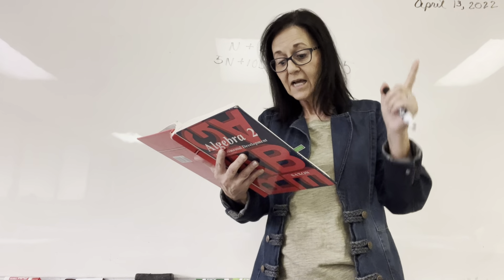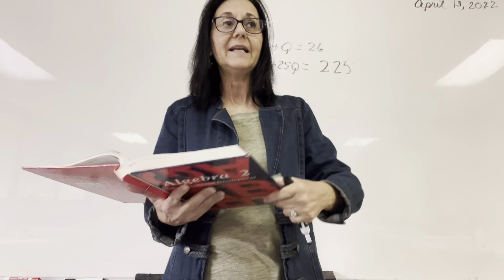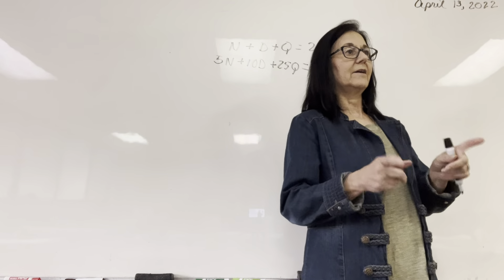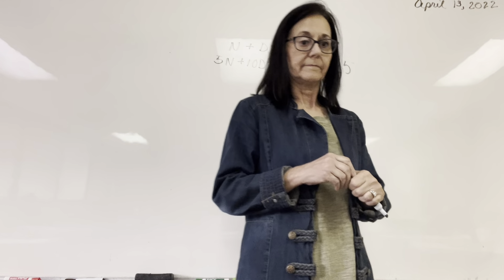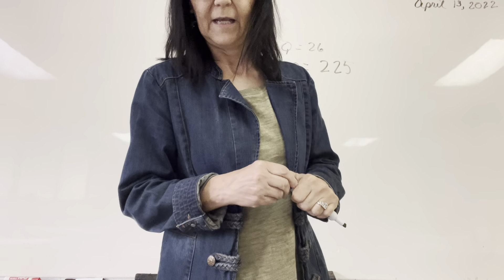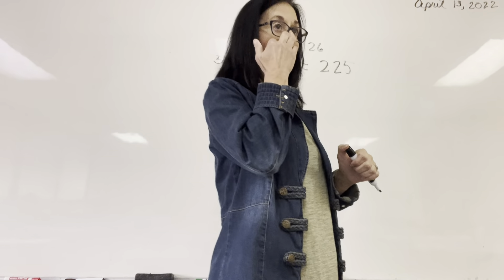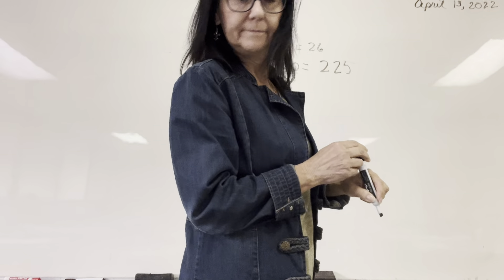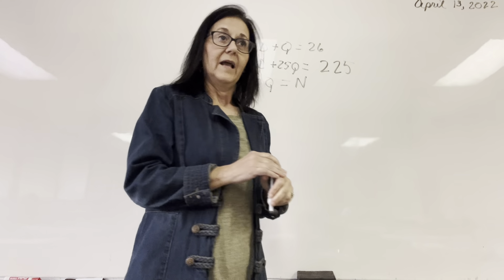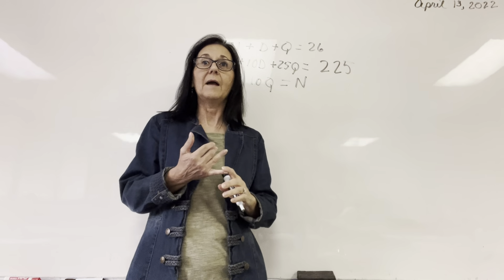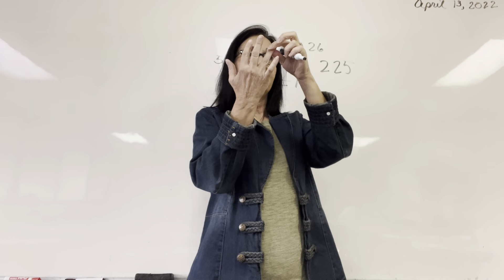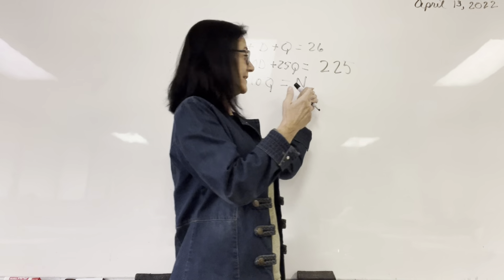If there were 10 times as many nickels as quarters — what do I have more of? Anytime you have 10 times as many of something as something else, the 10 straddles it: 10Q equals N. The one in the middle is by itself.